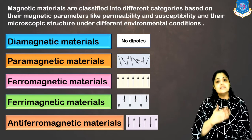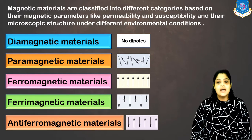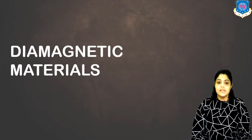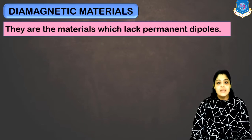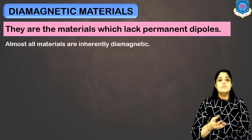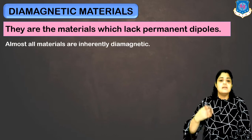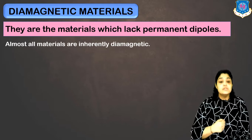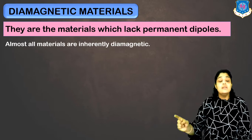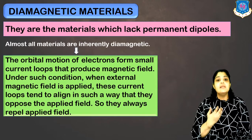Now I will discuss the properties of each and every type of magnetic material one by one. Let's start with diamagnetic materials. Diamagnetic materials are the materials which lack permanent dipoles. Almost all materials are inherently diamagnetic. These materials will always repel magnetic fields.